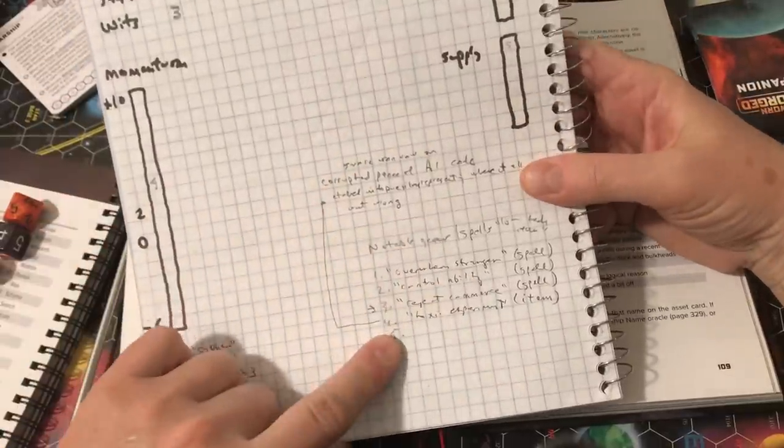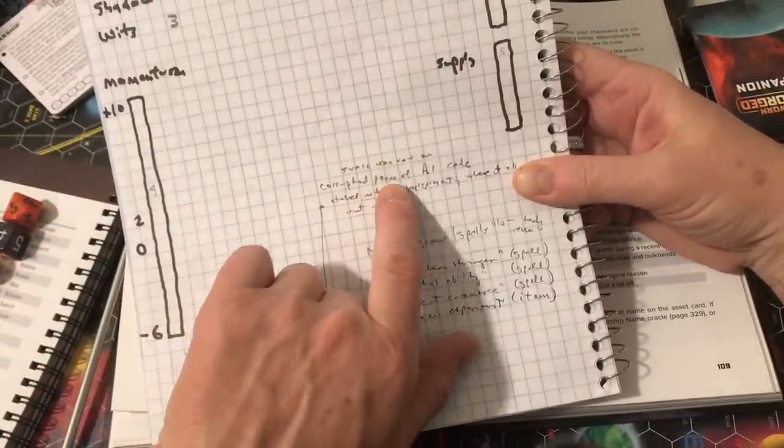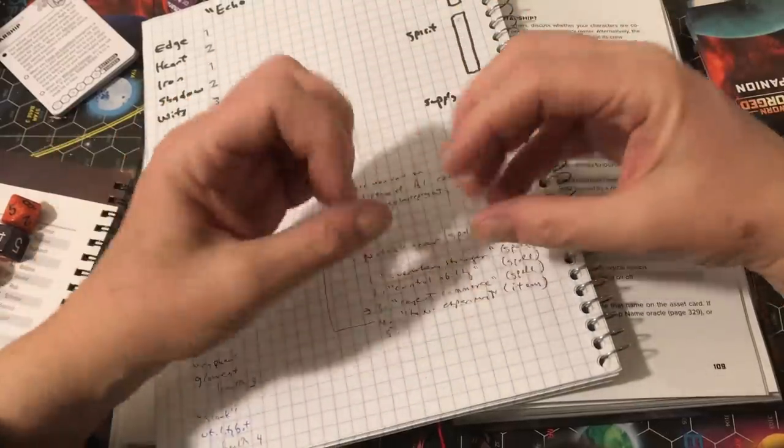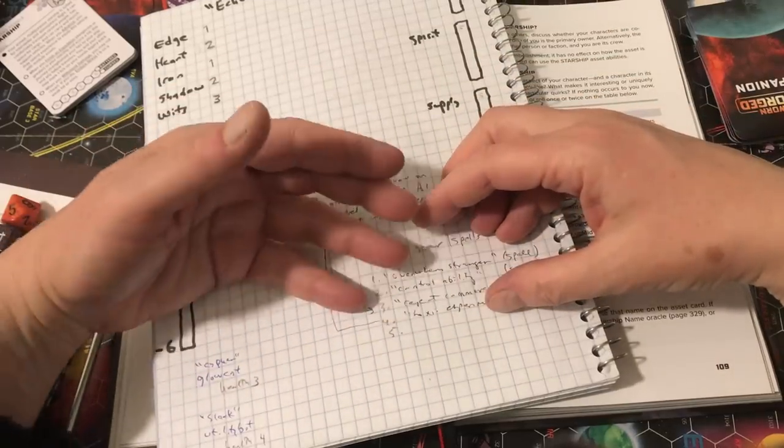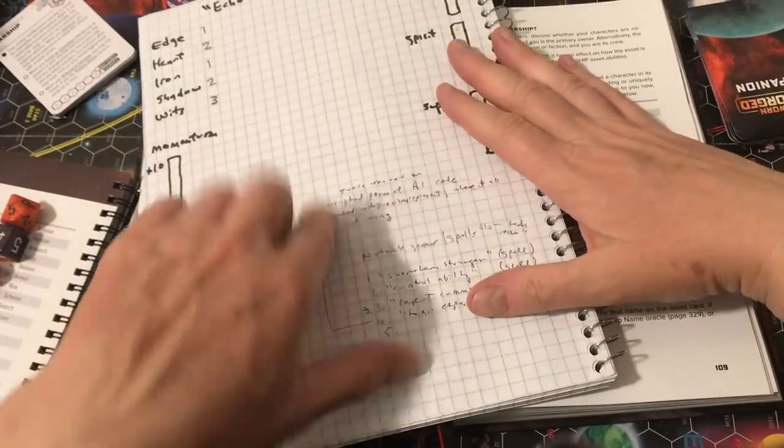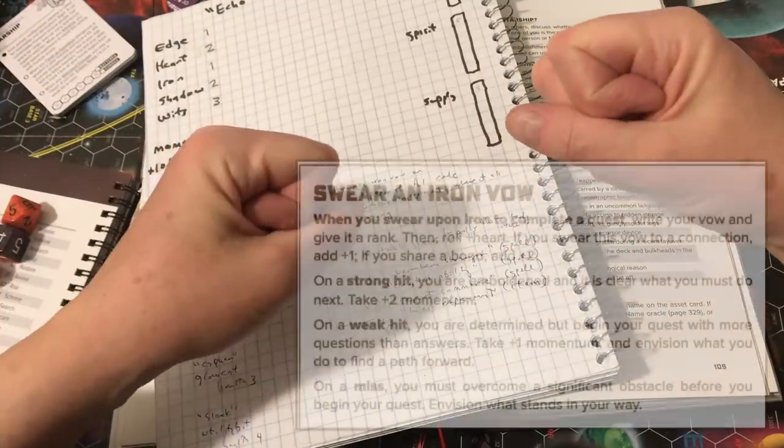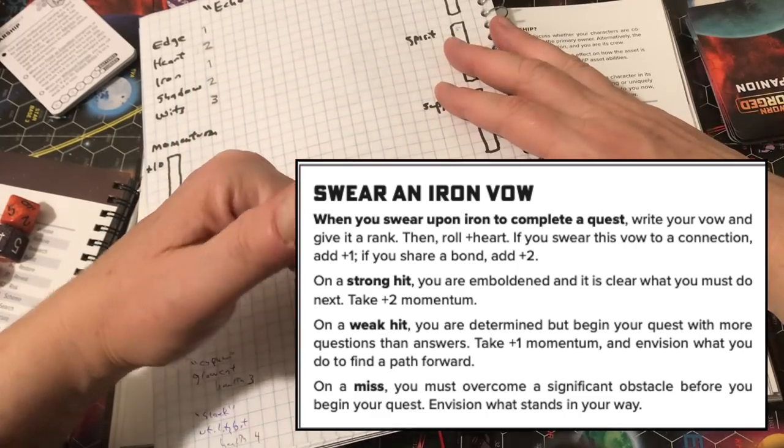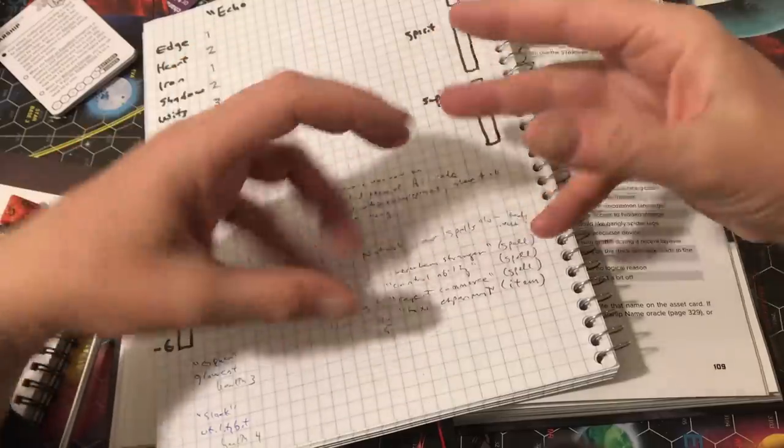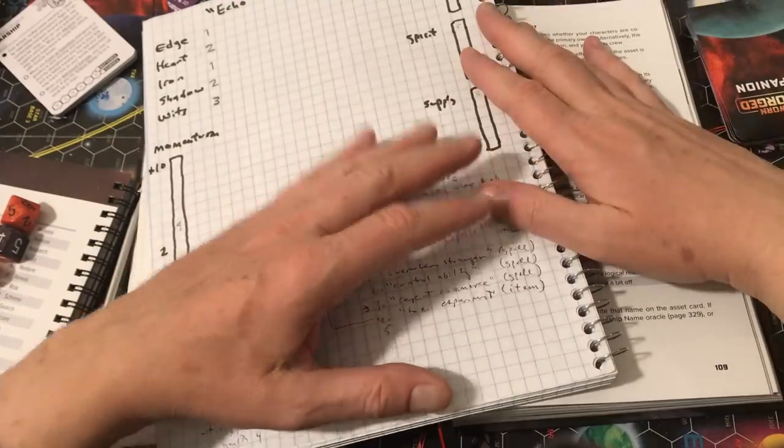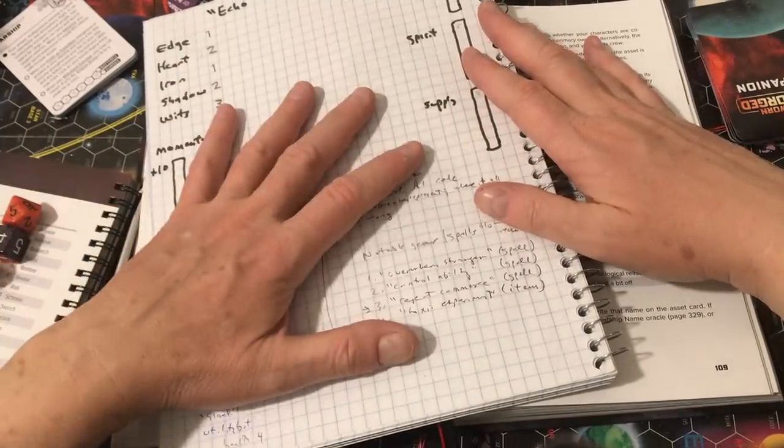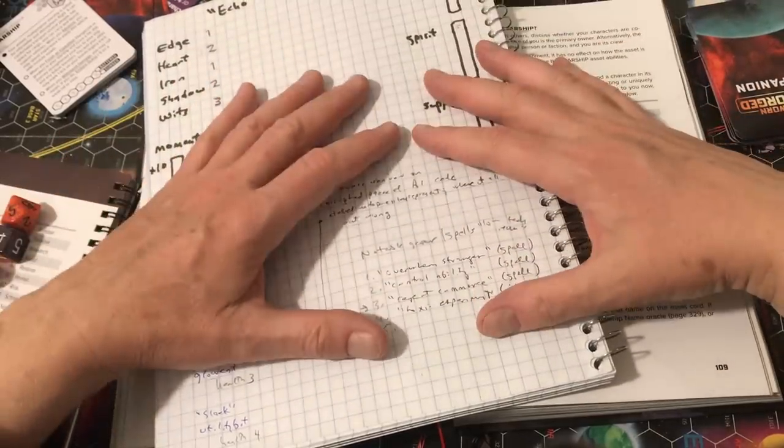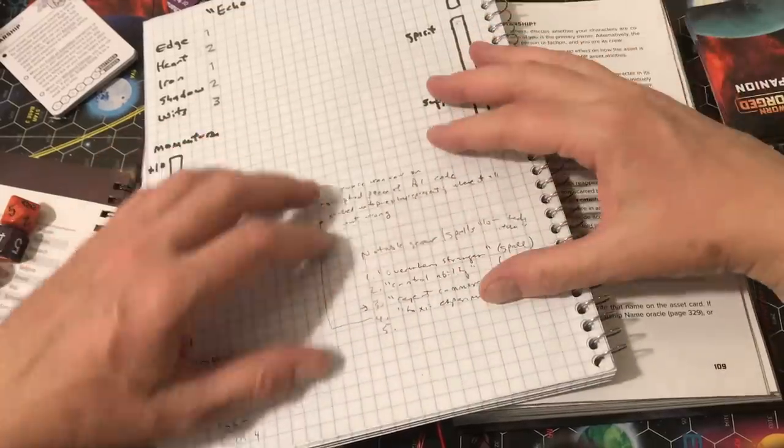So I gave myself stats that made sense to me with my character. And I am making a note here that I swore an iron vow on a corrupted piece of AI code etched into pure silver representing where it all went wrong. Part of this game, the concept behind the emotion of the game is to find an item, and I came up with this by rolling on some tables here that you're swearing your vow on. My mission, my goal now is to, in a sense, avenge the wronged AI. But also there is going to be something I will uncover about the fact that I was cast out by my own family, and that this AI is controlled by my family that is like this major corporation that is operating to now take the corrupted AI and do something bad with it.